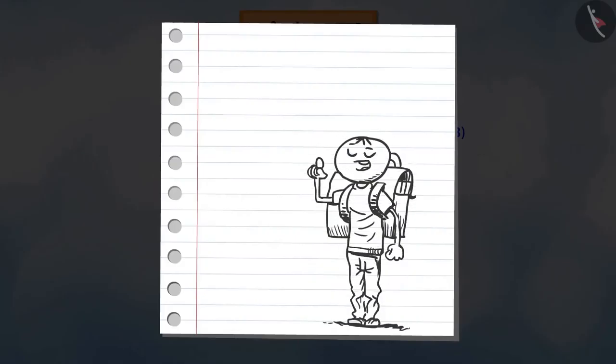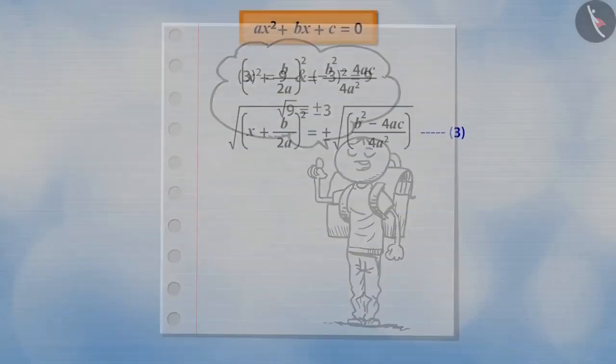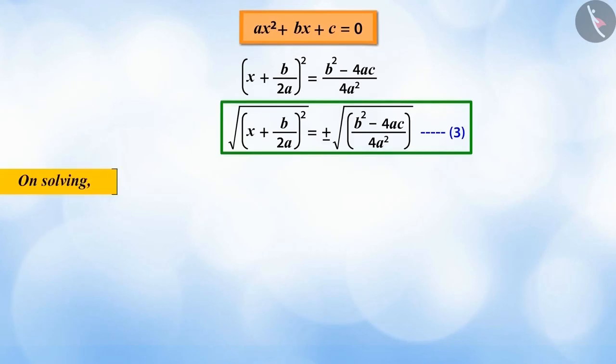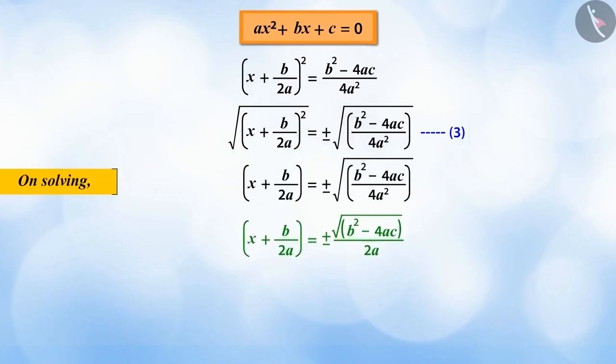Because when we square 3 and negative 3, we get positive 9. But when we take the square root of 9, then positive and negative 3 are obtained. So, on solving equation 3, we get this equation.